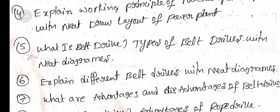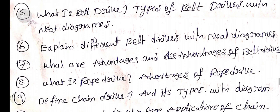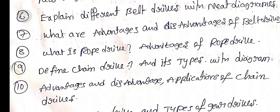Question 5: What is belt drive? Types of belt drives with neat diagrams. Question 6: Explain different belt drives with neat diagrams. Question 7: What are advantages and disadvantages of belt drives? Question 8: What is rope drive? Advantages of rope drive.